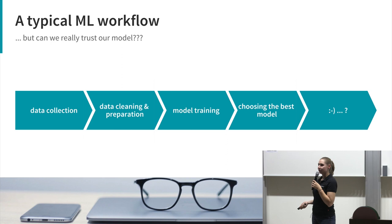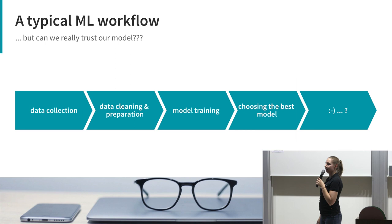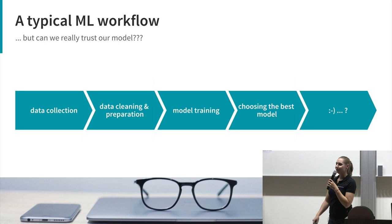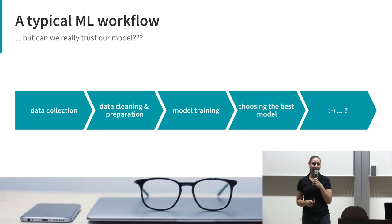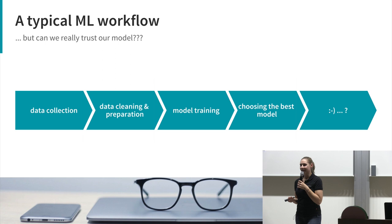Here's the typical machine learning workflow you probably all know: we start with data collection, data cleaning and preparation, then the fun part — model training, optimizing hyperparameters — and finally we end up with what for us is the best model. Maybe it has 99% accuracy, we're really happy, we go to our boss and say 'here we have the perfect model, we can deploy it now.' And usually we stop there — we're happy when we have great accuracy and we say 'now I trust my model because the numbers say so.'